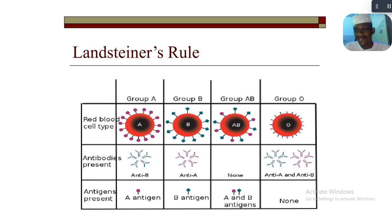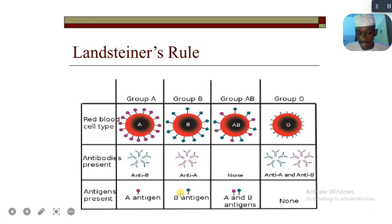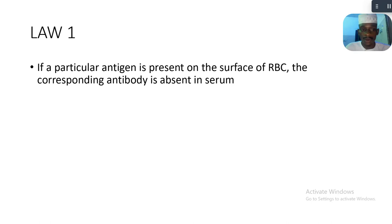Before we talk about the laws, let's look at an image. We can see that for blood group A, in the serum, antibody A will be absent — instead, antibody B will be present. And the antigen present in blood group A will be antigen A. So this illustrates that when the antigen is present, the corresponding antibody is absent. We will also get to see conditions that are exceptions to this rule.